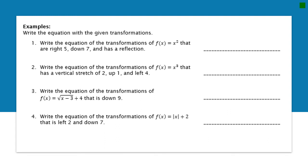Now we're going to be given transformations and write the equation that goes with them — so we're going backwards. For this first question, it tells us the family: transformations of f(x) = x², so that's the quadratic family. Remember the standard form: a(x minus h)² plus k. It's asking us to write right five — that's my h value — down seven — that's my k value — and has a reflection, which means my a value needs to be negative.